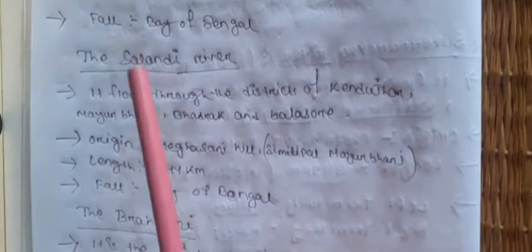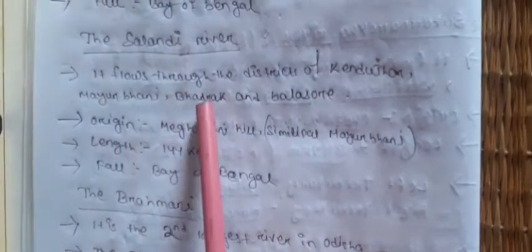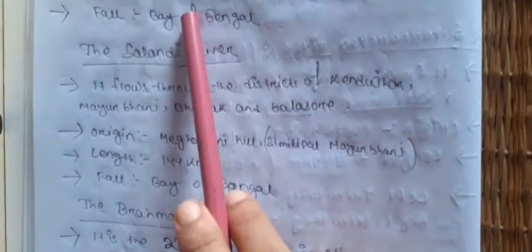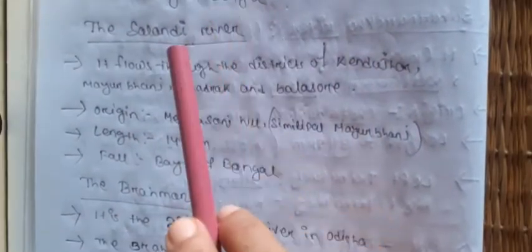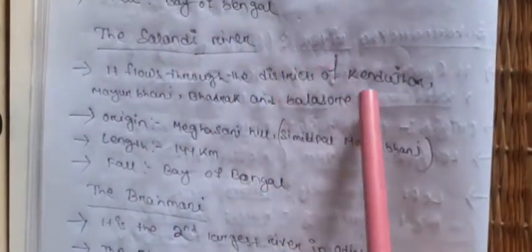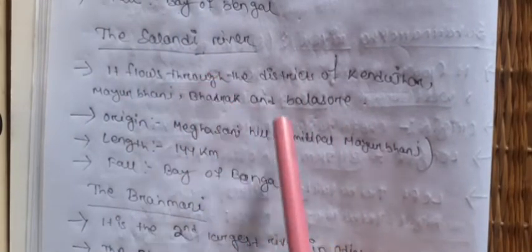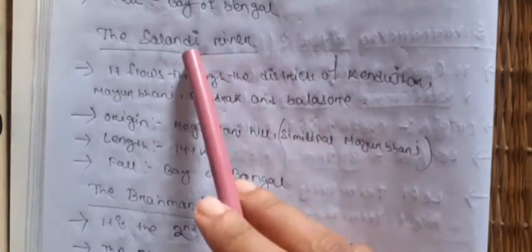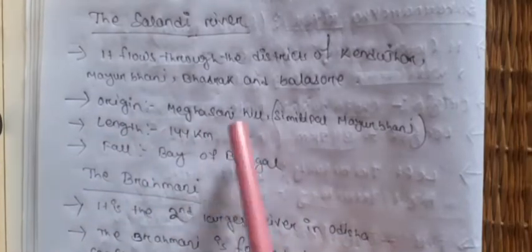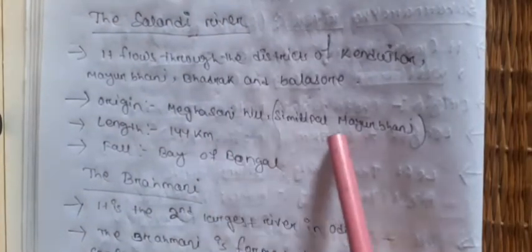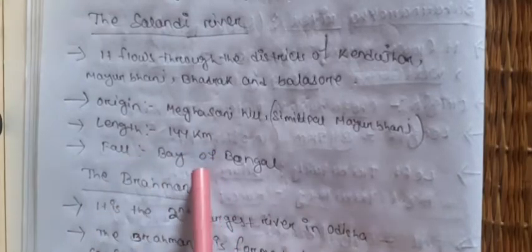Salandi river is a tributary of Vaitarani. It flows through the districts of Keonjhar, Mayurbhanj, and Bhadrak — same as Vaitarani but without Jajpur. Its origin is at Megasani hill in Mayurbhanj district, similar to Simlipal. Length is 144 km. It finally falls into the Bay of Bengal.